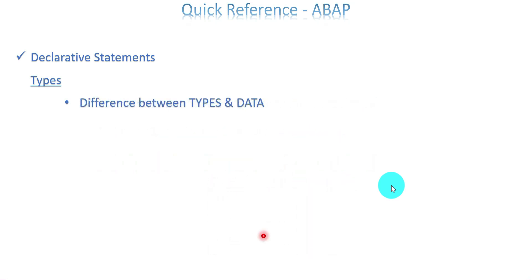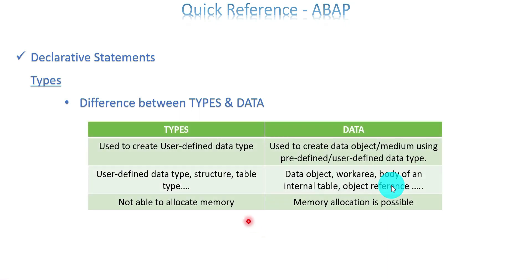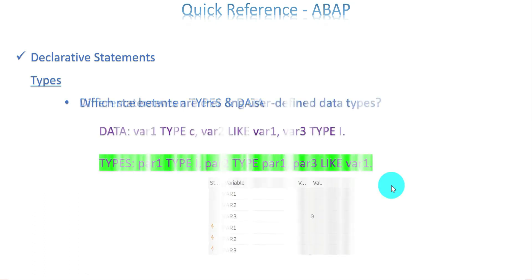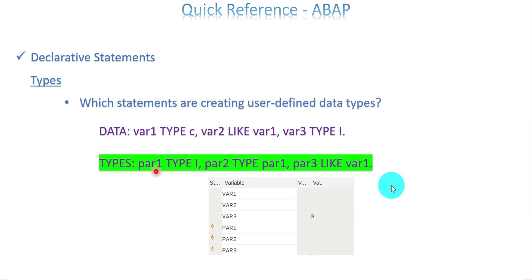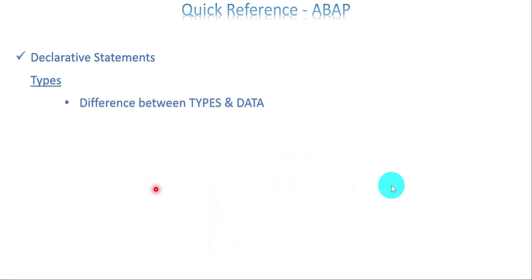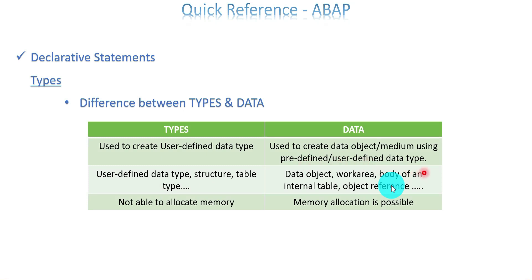Difference between TYPES and DATA — this comes up in most discussions. TYPES is used to create a user-defined data type, that is very clear now. DATA is used to create a data object or data medium using a predefined or user-defined data type. For example, from the previous slide, par1 was created as a user-defined integer data type — with the help of DATA you can create a data object or integer variable using that par1 data type, either predefined or user-defined.